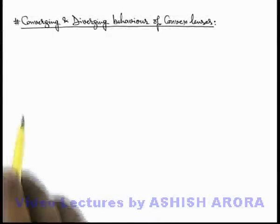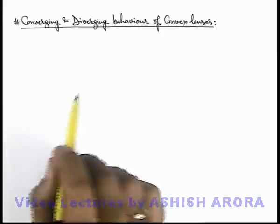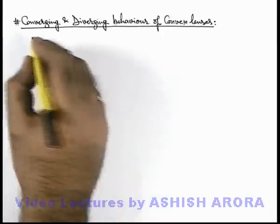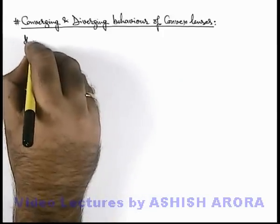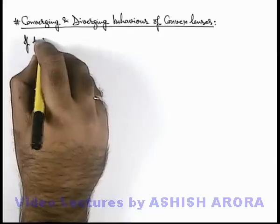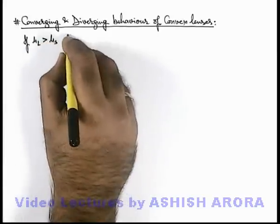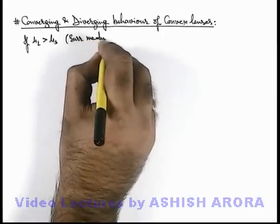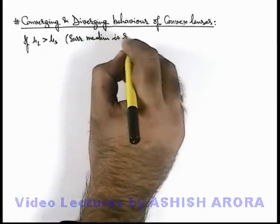Now we'll study the converging and diverging behavior of convex lenses. In general, when a convex lens is placed in a rarer medium, or we can write if mu of lens is more than that of mu of surrounding, that means the surrounding medium is rarer.